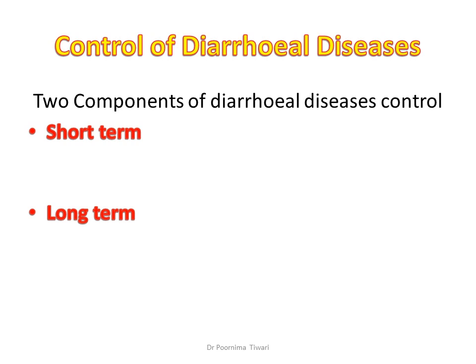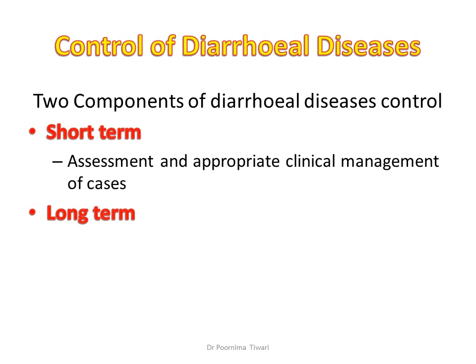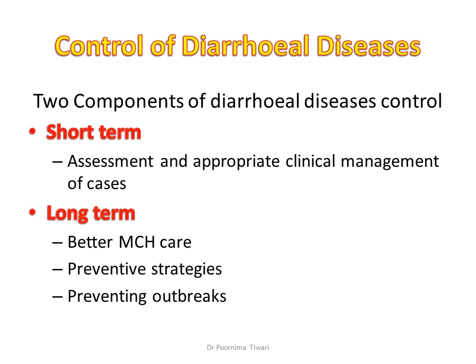Short-term strategy means appropriate management of existing cases so that they recover fast and are back on their feet. Long-term strategies include better maternal and child health care so that they are healthy enough not to get episodes of diarrhea. Other preventive strategies involve preventing outbreaks — identifying an unusual number of cases immediately and trying to stop it before it turns into a larger outbreak.